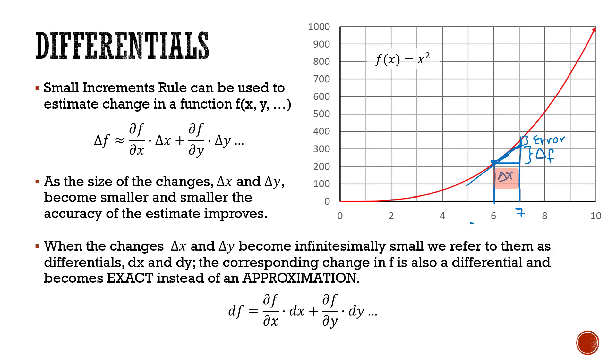Now as these x values get smaller and smaller, eventually they're going to become infinitesimally small. And when we get to that limit, that infinitesimally small level, we call this a differential and we change the notation to dx and dy. And what's going to happen is this corresponding error also shrinks and shrinks and shrinks until we have an exact value for our change instead of just an approximation.